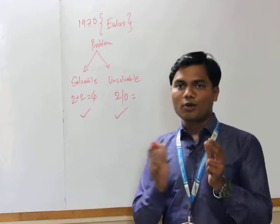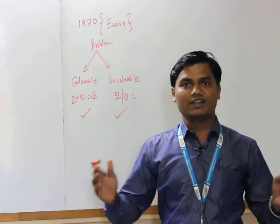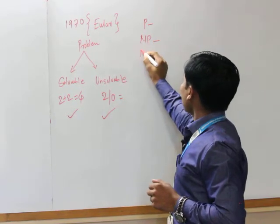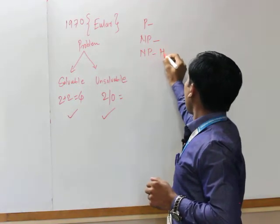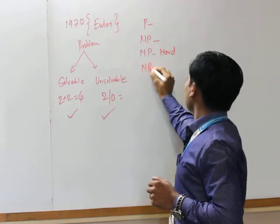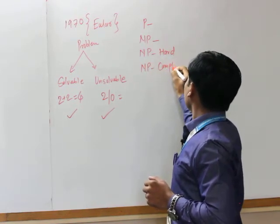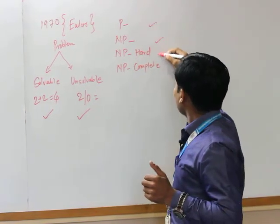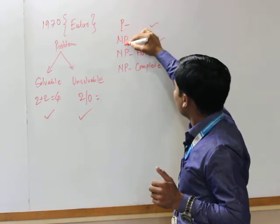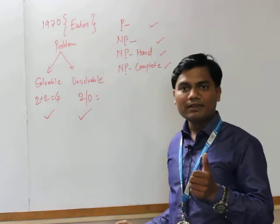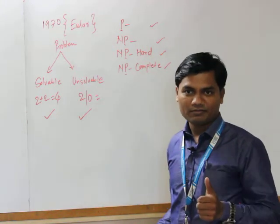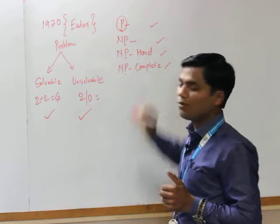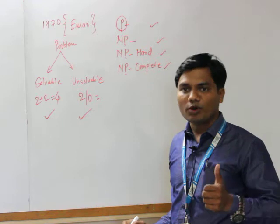On the basis of this solution, problems are categorized into different classes: P class, NP class, NP hard class, and NP complete class. Each keyword consists of one common element — that is P. P is nothing but polynomial time. So first we will see what is polynomial time.